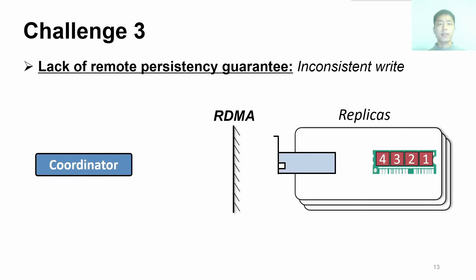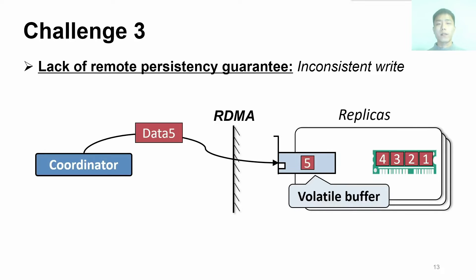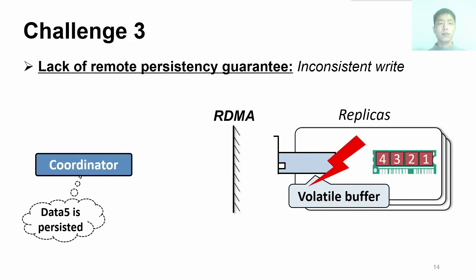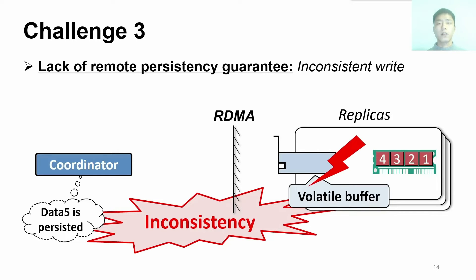The third challenge is that existing DRAM-based systems do not guarantee remote data persistency, which causes inconsistent writes when using PM as remote memory. Specifically, when the coordinator writes data to the RNIC, it buffers the data in its volatile buffer and returns an ACK after validating the network packet. After receiving the ACK, the coordinator believes the data has been written to PM. However, the data is possibly still in the RNIC buffer. Once the replica fails, the buffered data is lost and inconsistency occurs. Therefore, we need a low-overhead scheme to guarantee remote persistency.